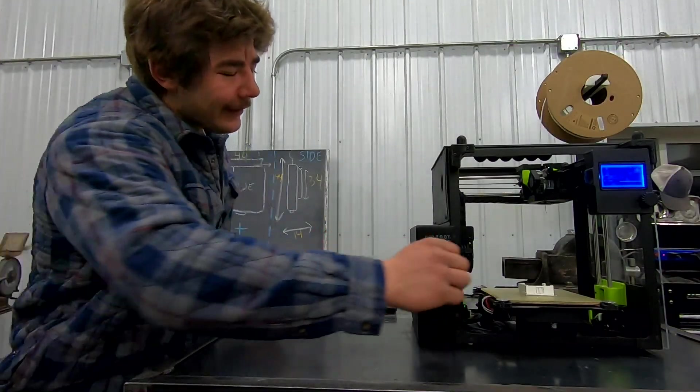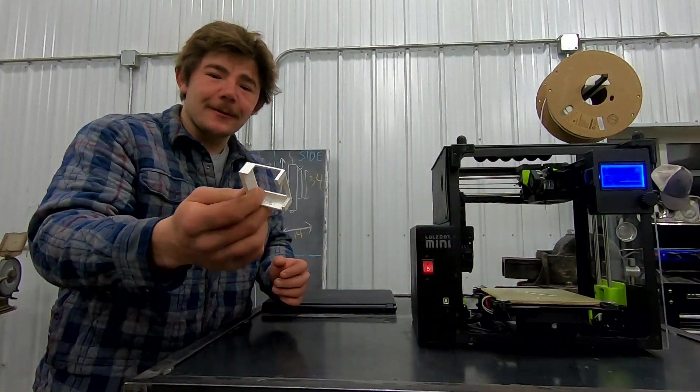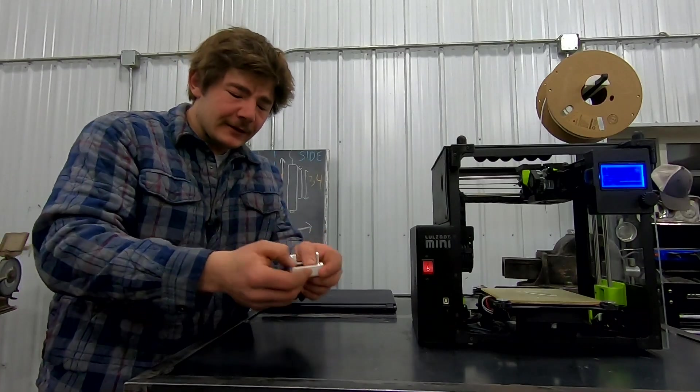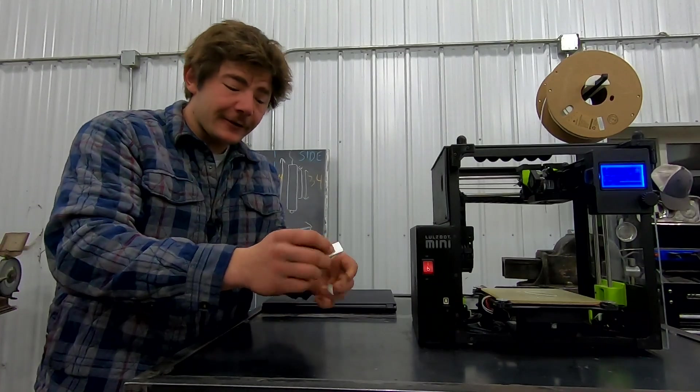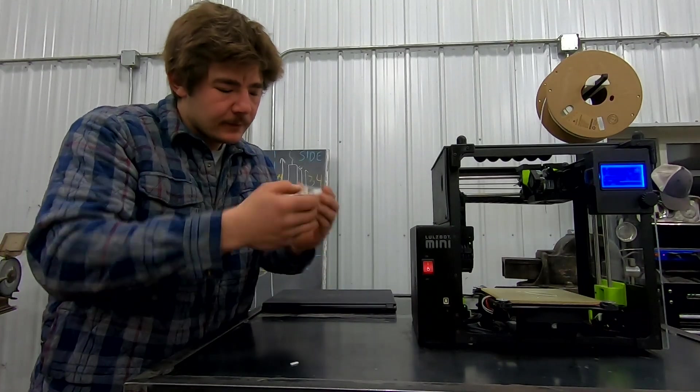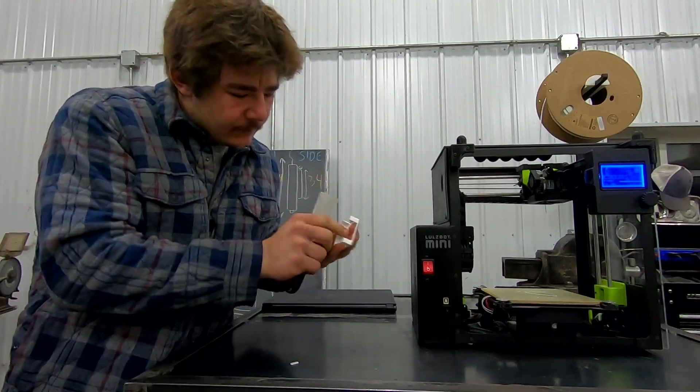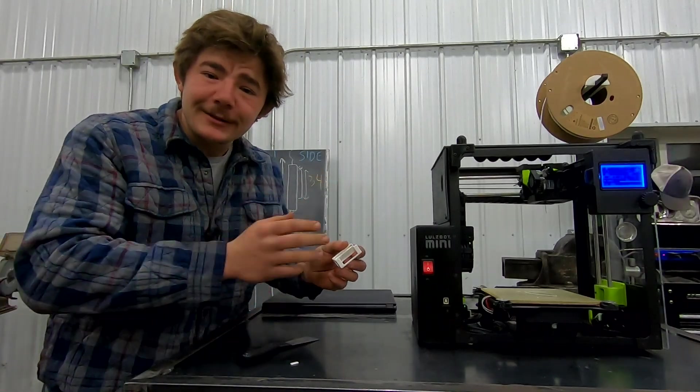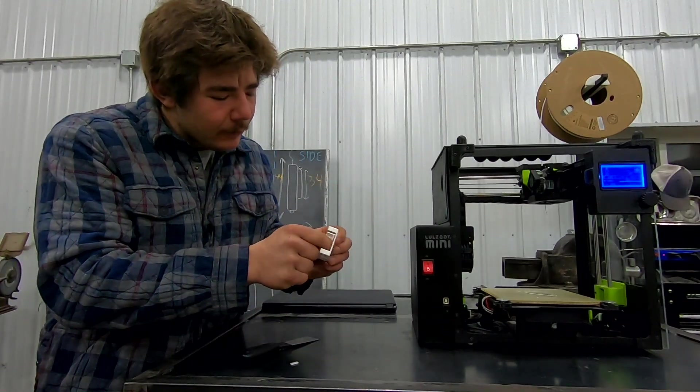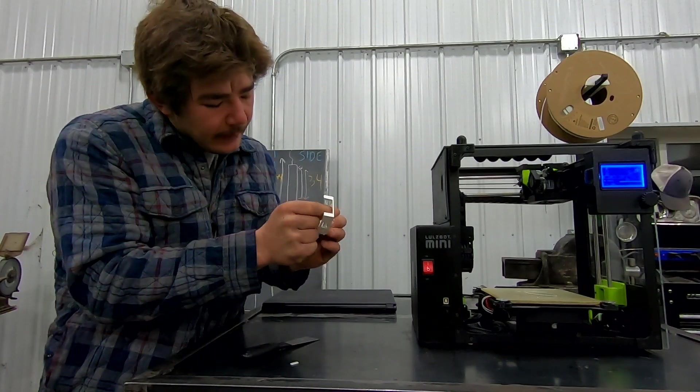Just like that, our 3D model is now a tangible object. Let's remove these inside supports and see if our transmitter fits. So all those supports that we saw on the slicer were made to be removed. That's what I'm doing right now.